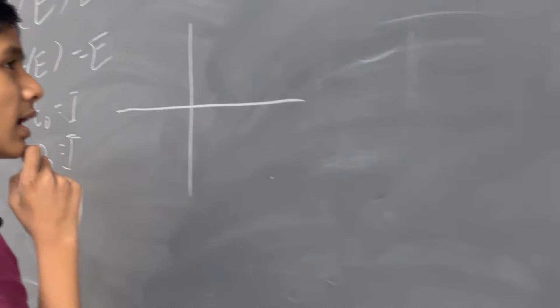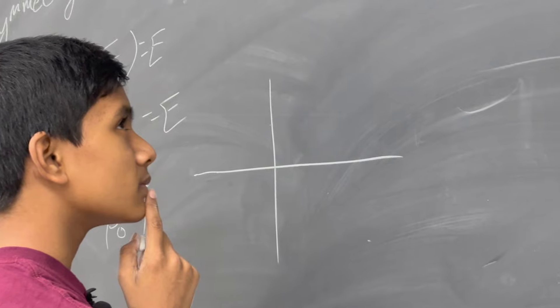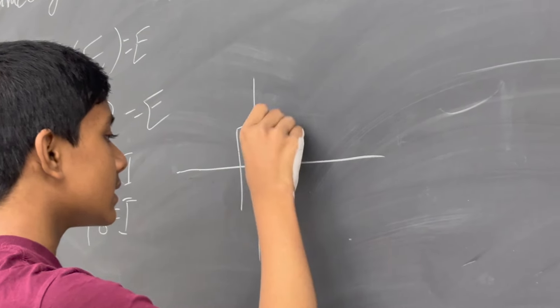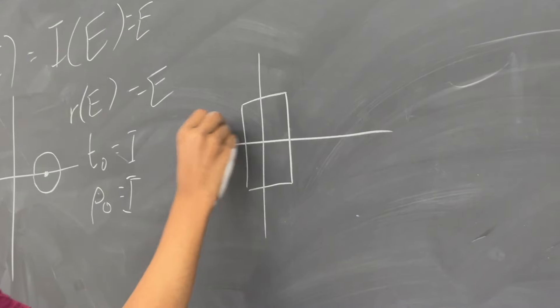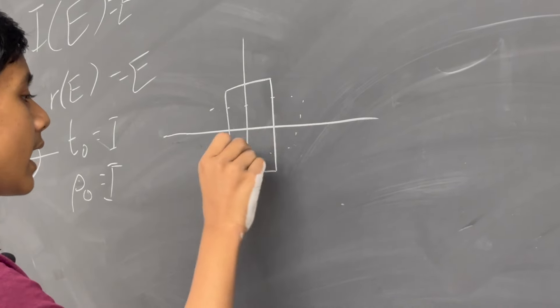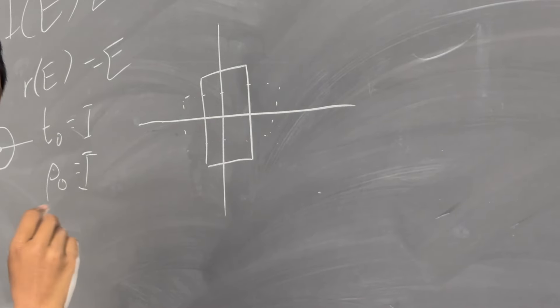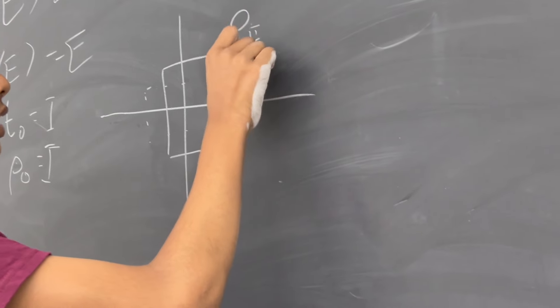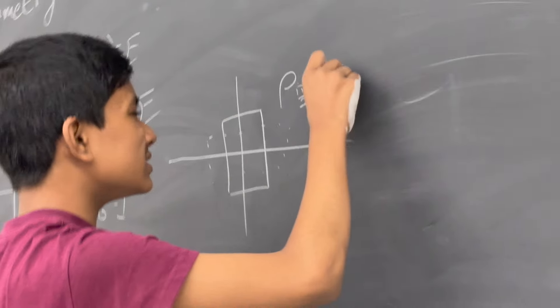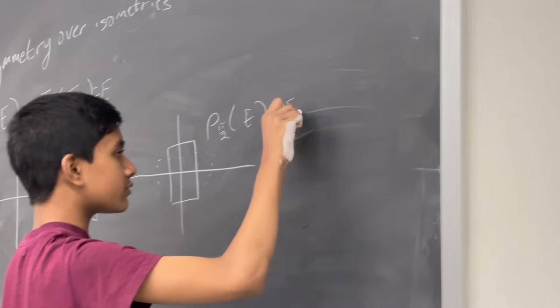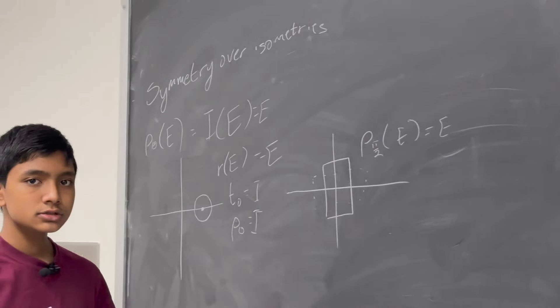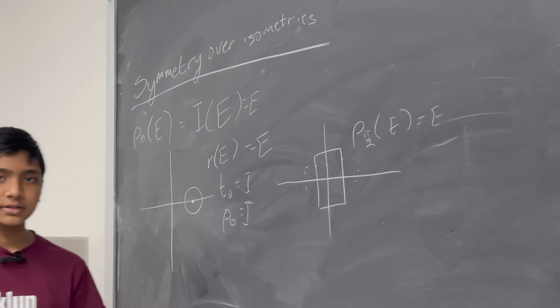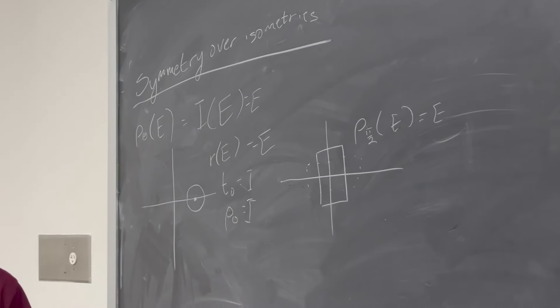And, for example, if we have something like this, this rectangle right here is not going to be symmetric to itself if it gets rotated by 90 degrees. But, if it gets rotated by 180 degrees, or pi over 2, it'll rotate back to itself. So, these are called symmetries over isometries. So, these are also pretty important.